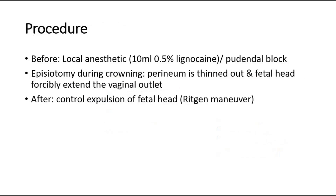This is the procedure for episiotomy. Before episiotomy, infiltrate the region with local anesthetic, which is 10 ml of 0.5% lignocaine, or we can use a pudendal block. Episiotomy is done during crowning, when the perineum is thinned out and the fetal head forcibly extends the vaginal outlet.